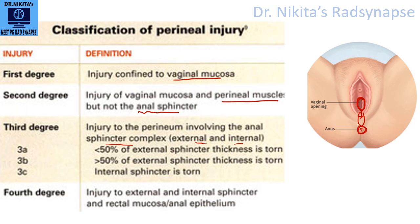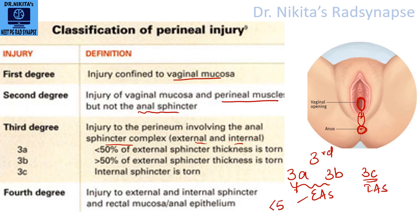Third degree is when there is injury to the anal sphincter complex — both external and internal. Remember: third degree, three subcategories — 3a, 3b, and 3c. 3a and 3b involve the external anal sphincter: 3a is less than 50% involvement, 3b is more than 50%. 3c involves the internal anal sphincter. Fourth degree is when it extends to the rectal mucosa or anal epithelium — first external sphincter, then internal sphincter, then anal epithelium.